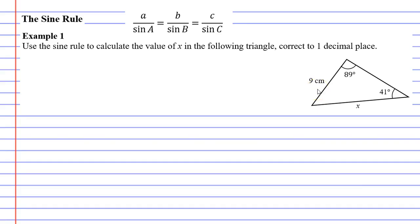So we'll start by labeling our vertices with capital letters. We'll go with capital A, capital B, and capital C. Now if we go opposite these capital letters we get our lowercase letters. Opposite capital A is lowercase a, opposite capital B lowercase b, opposite capital C is lowercase c.